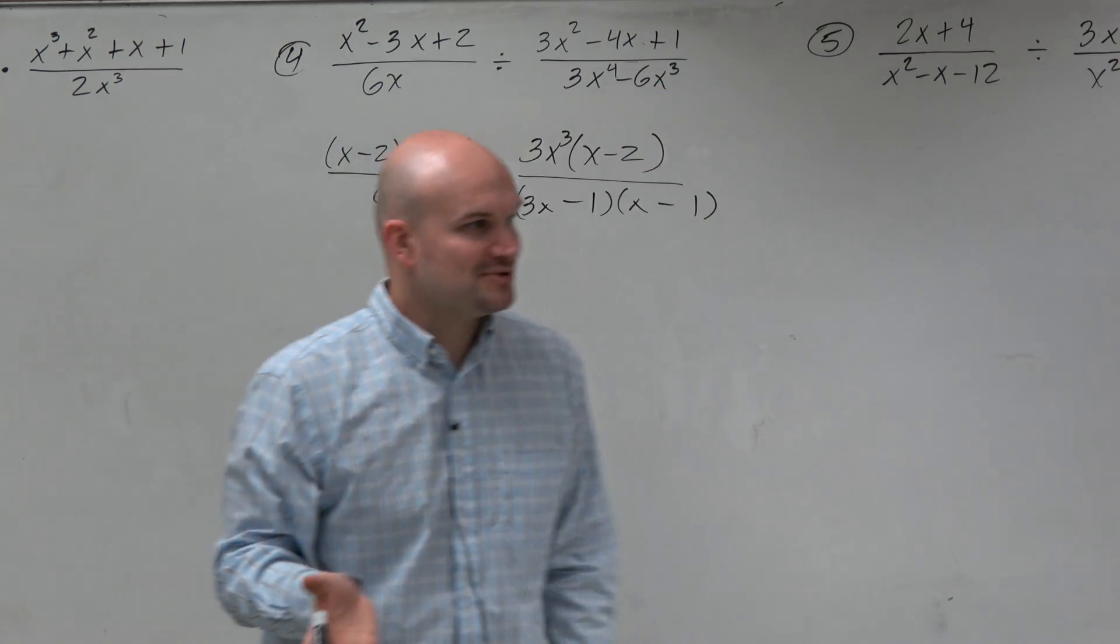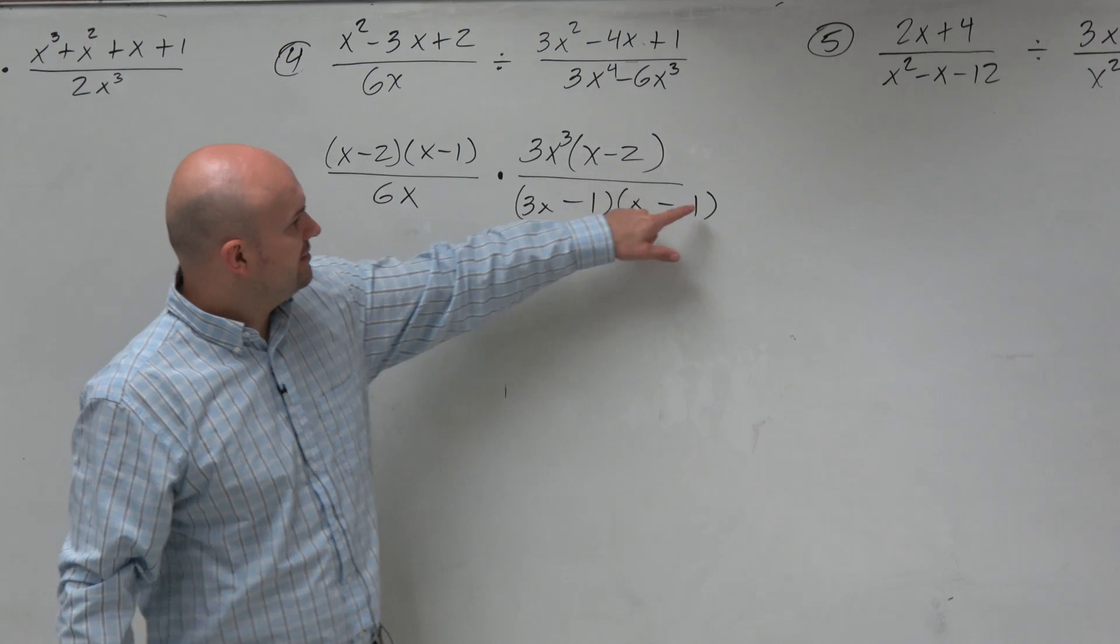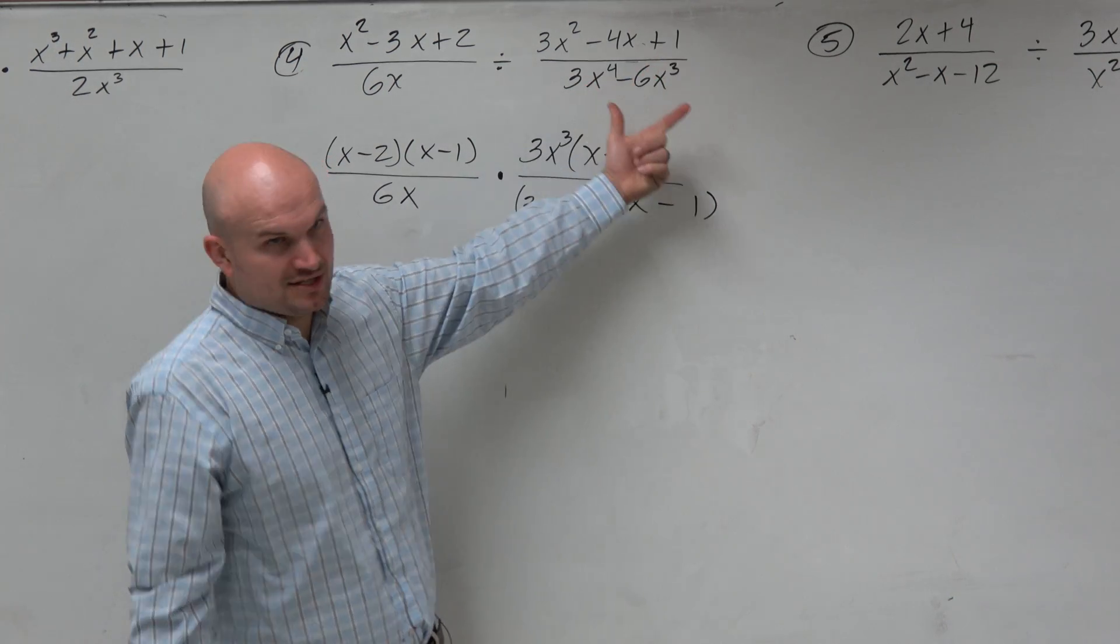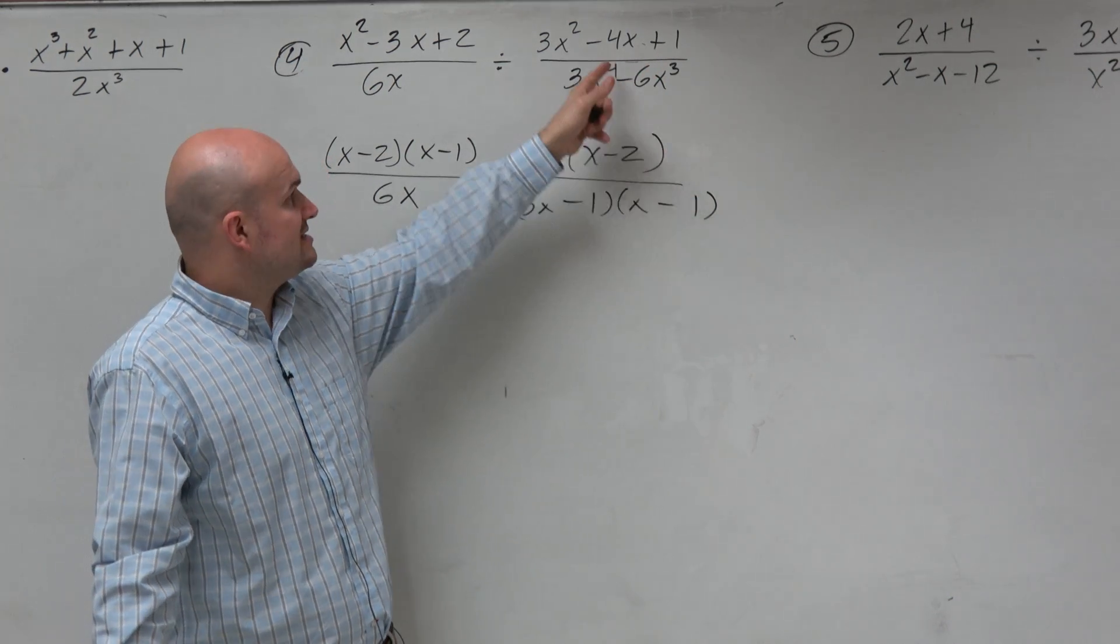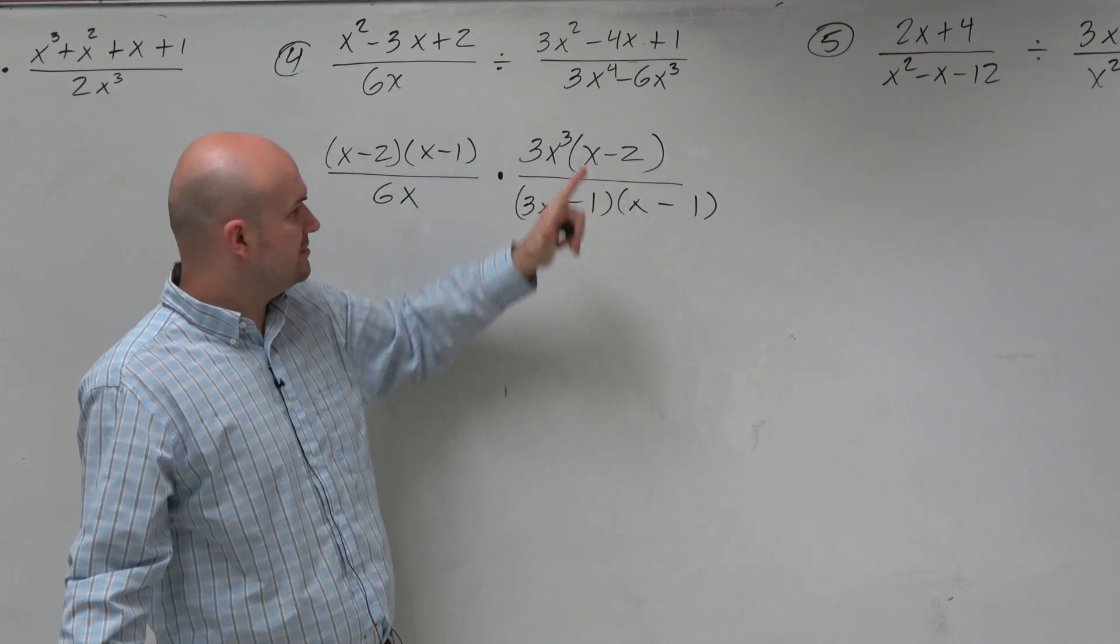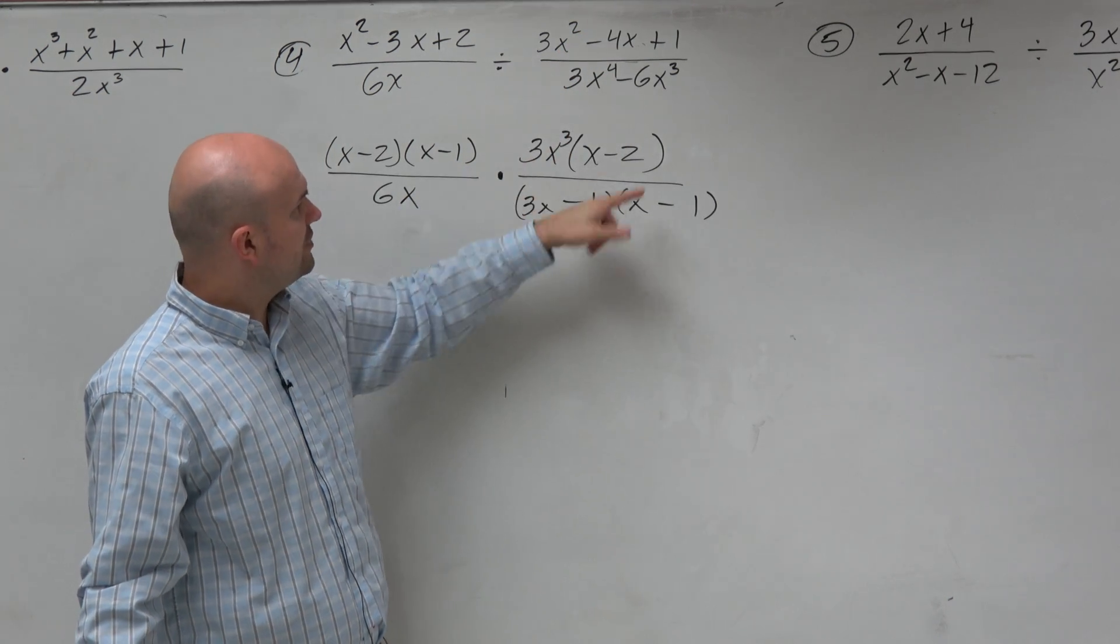I literally only had one option. These had to multiply to give me 1. So it had to be 1 and 1. And since the middle terms were negative, I had to get that one. And then I just double check. Negative 1, yeah, that works.